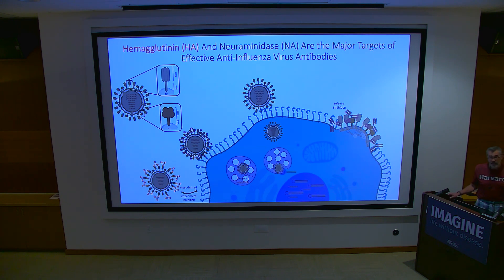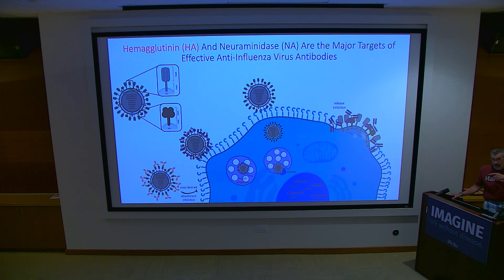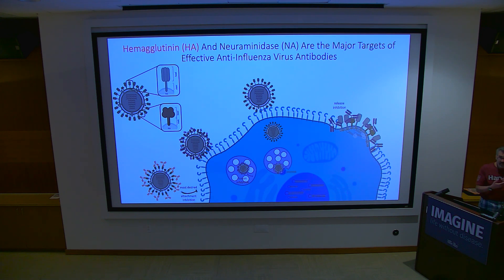Do we immunize against neuraminidase? Not intentionally. The least expensive vaccines made in eggs contain both hemagglutinin and neuraminidase after detergent treatment, but vaccine companies were never required to measure how much neuraminidase is in the vaccines. We've shown by weight that neuraminidase is the most immunogenic part of the virion in mice.